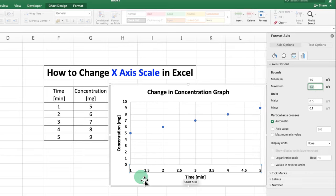As you can see here, the x-axis numbers are 1, 1.5. So if you don't want it in the fractions, then under the unit, under the major, you just select it here and enter for example 1.